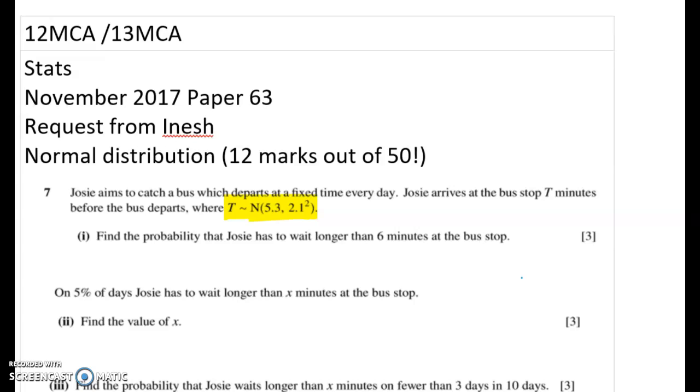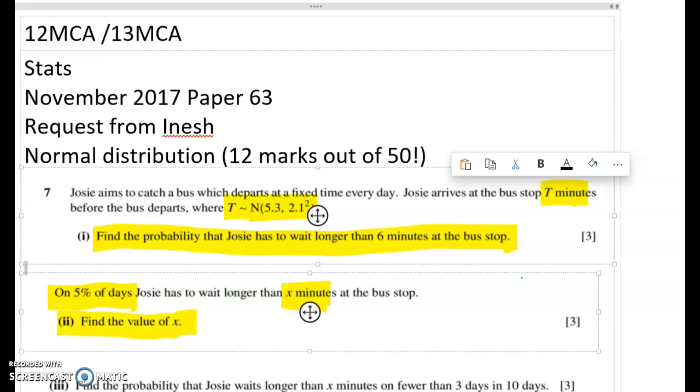So Josie aims to catch a bus and the bus departs at a fixed time every day and she gets to the bus stop 10 minutes before it goes. First we have to find the probability that she has to wait more than six minutes. That's straightforward and then we have to go backwards because on five percent of days she's got to wait longer than some number at the bus stop. We have to figure out that number and then I'm going to come back to the next couple of questions when I get there.